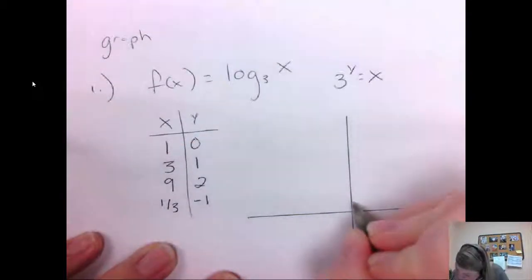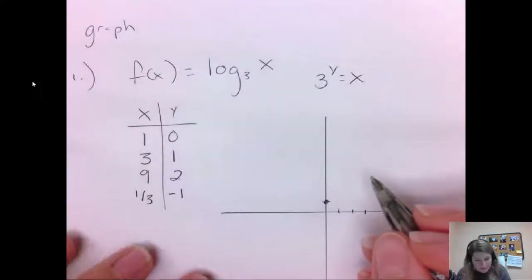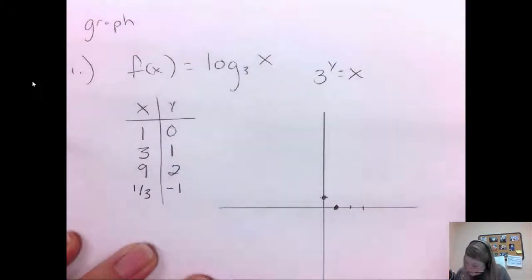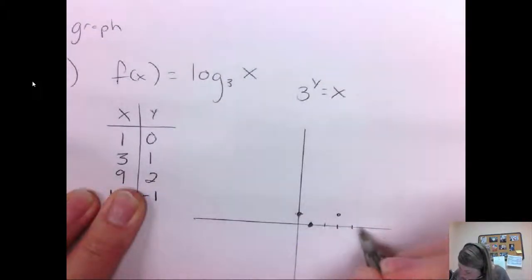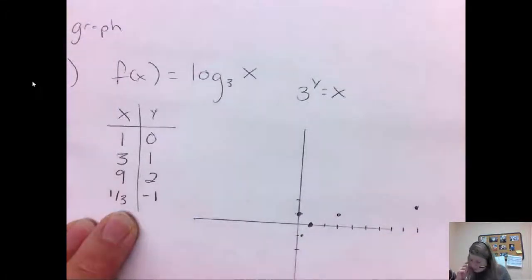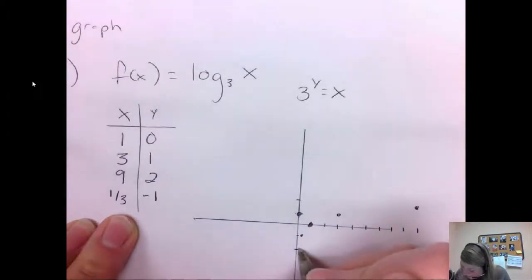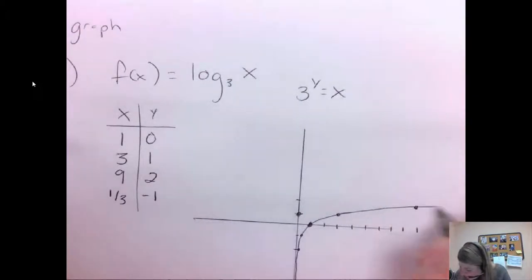OK, so we have 1, 0. 3, 1 is going to be here. And then 9, 2. It's about here. And then 1 third, which is barely over, is all the way down at negative 1. And if you had like negative 2, it would have been 1 9th. So that's even like closer. But that will continue to form fractions. So it's one of those asymptotes where it gets really, really close to that line, but it never is going to cross. And that is what our graph looks like.